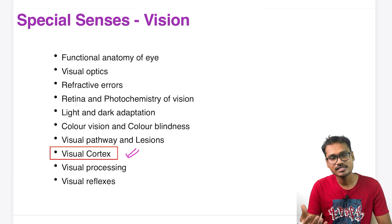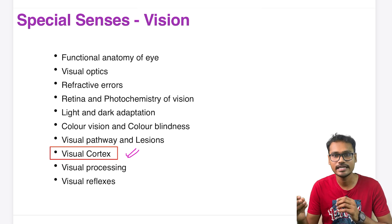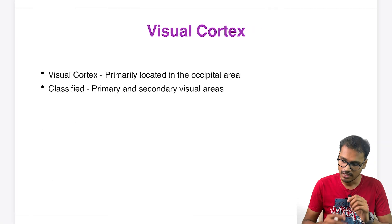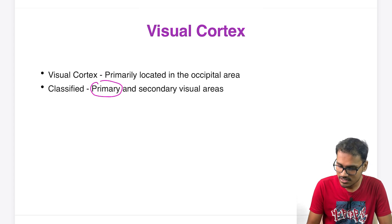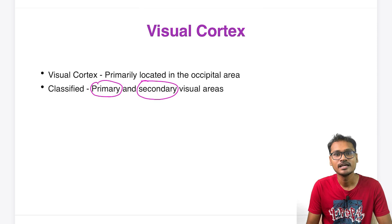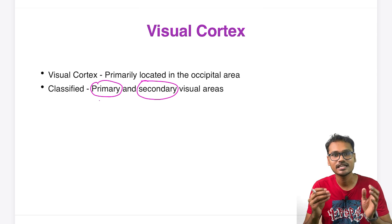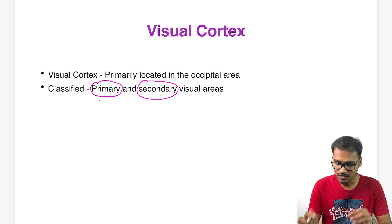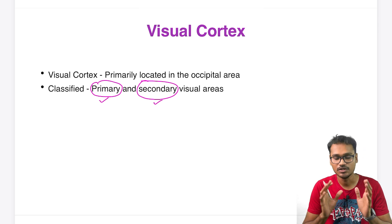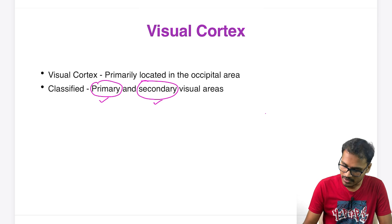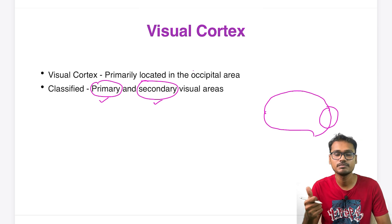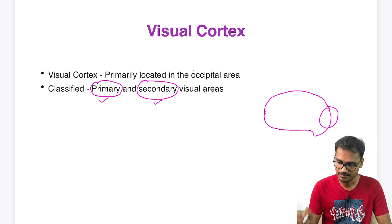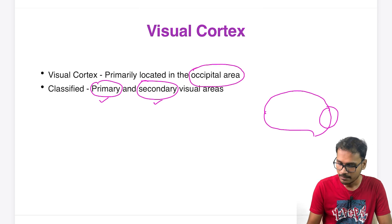In the previous session we saw that the visual cortex is present in the occipital lobe. Today we will discuss more different areas present in the visual cortex. Most visual information goes to the occipital lobe, and that is why whenever there is damage to the occipital lobe the person will have some visual defects.